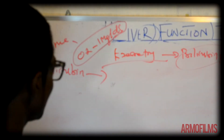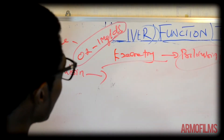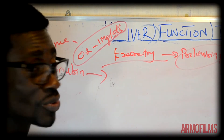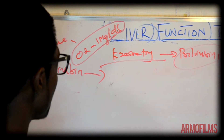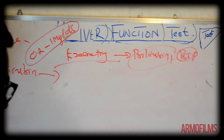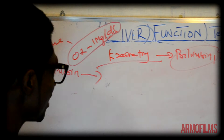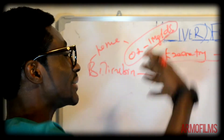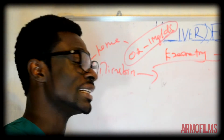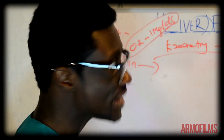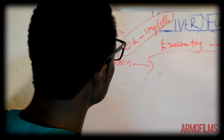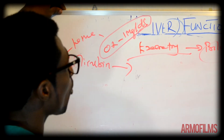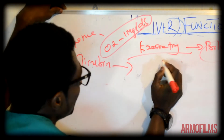The liver serves a very crucial role in the maintenance of bilirubin concentration. Any impairment of the liver will lead to an increase in the concentration of bilirubin in the blood. This condition is associated with what we call the icterus index.